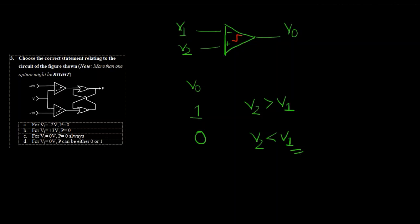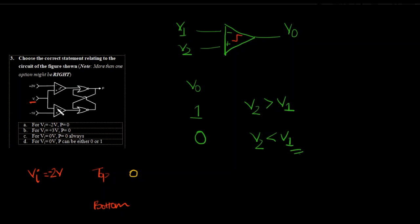Let us take case 1: when VI equals minus 2 volts. At the top comparator, minus 2 is compared with plus 2 — plus 2 is greater than minus 2, so V2 is less than V1, hence the output of the top comparator will be 0. And minus 2 is fed to the bottom comparator — is minus 1 greater than minus 2? Yes. Hence the bottom comparator will give a value 1. So the values at this point will be 0 and 1.